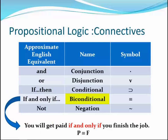The biconditional connective, also called logical equivalence, is expressed by the triple bar. It is true if and only if both of the statements have the same truth value. If one statement is true and the other is false, the compound statement is false. The compound statement is true if both statements have the same truth value, either both true or both false.